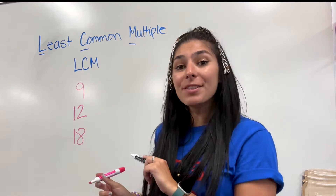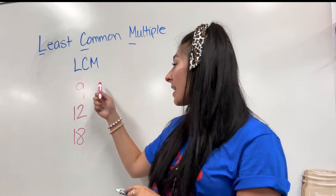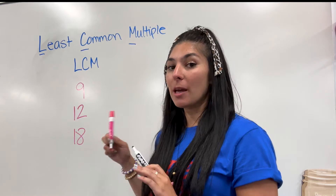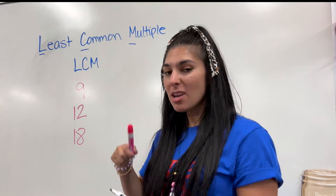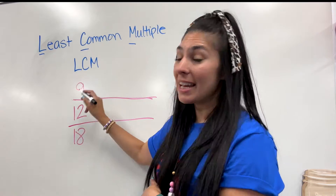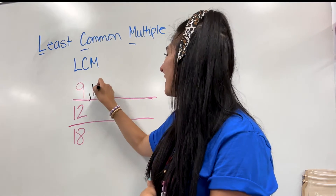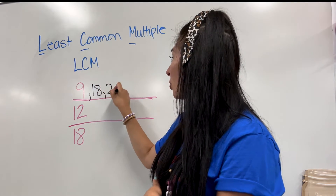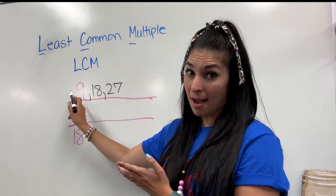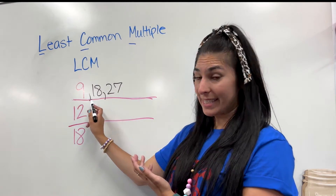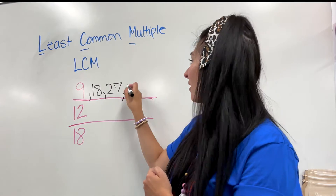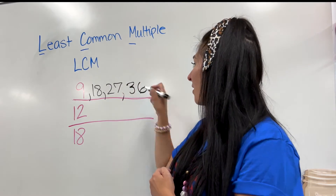First I'm doing least common multiple. I have the numbers 9, 12, and 18. I'm going to skip count these numbers. Skip counting by 9s: 9 times 1 is 9, 9 times 2 is 18, 9 times 3 is 27, 9 times 4 is 36.